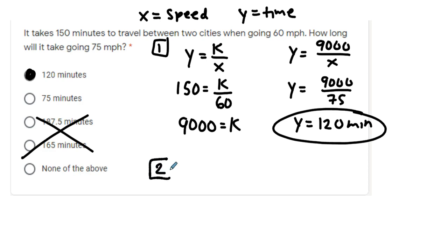Technique number two is you can use proportions. When you're using proportions, the items that come from the same story have to be diagonal from one another. So if this is 150 minutes, 60 miles per hour needs to go here. Most people would then place 75 here, x here, and then you solve using cross-product property.